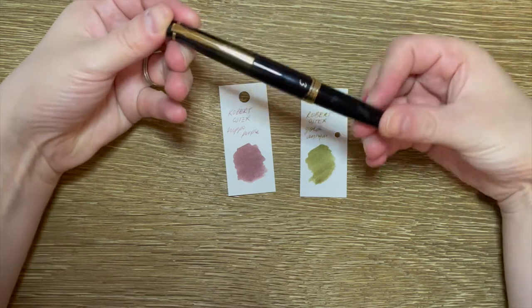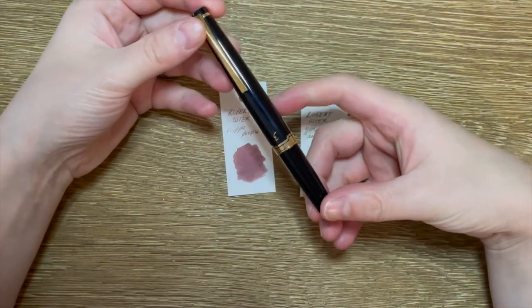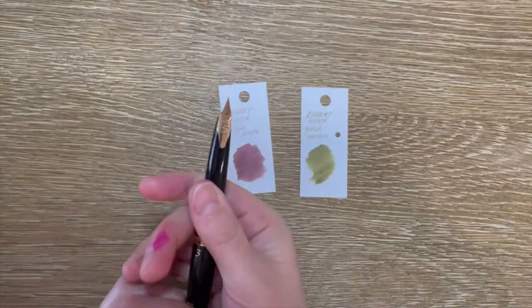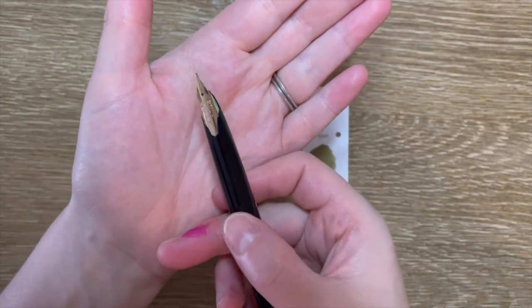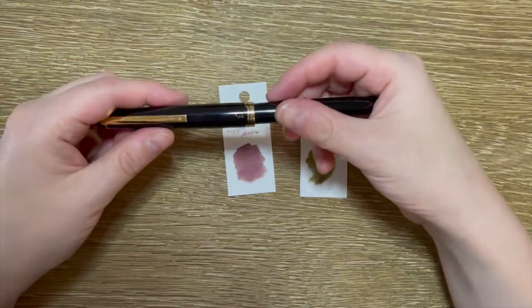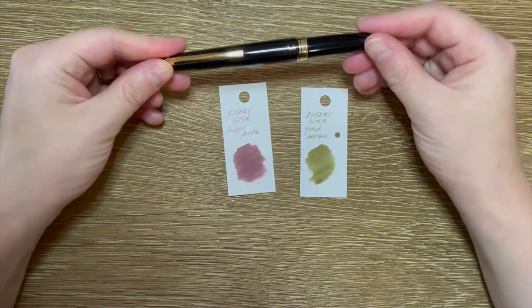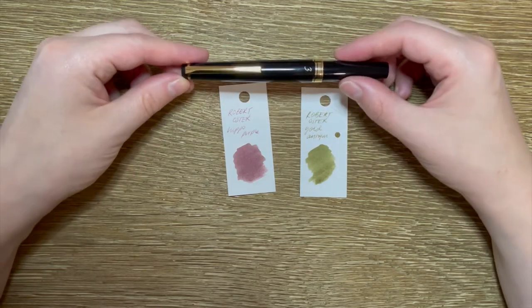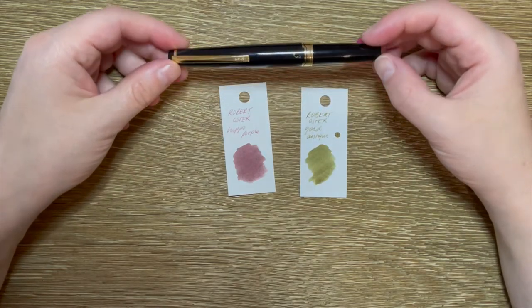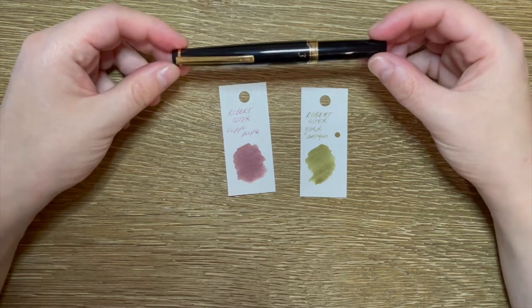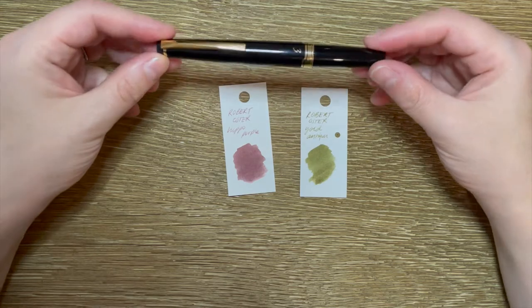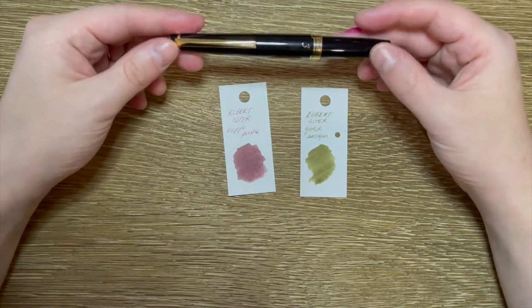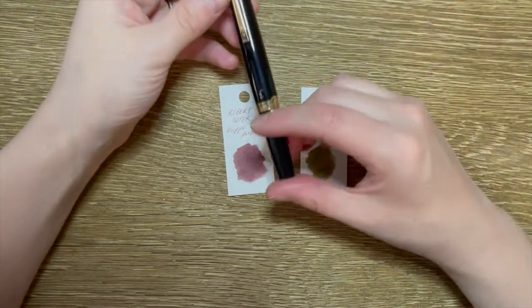This pen represents a couple of firsts for me. It's the Pilot E95s in a fine nib, 14 carat. Before I go into all the details about the pen and show you some writing samples, what are the firsts that it represents? Number one, it's the first pen that I've bought secondhand from someone from the fountain pen Australia and Oceania Facebook group. Number two, it's my first gold pen, 14 carat.